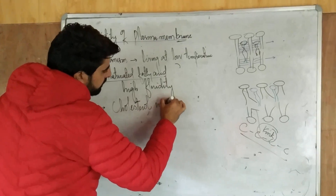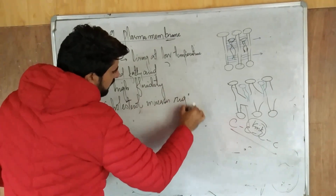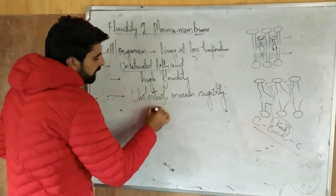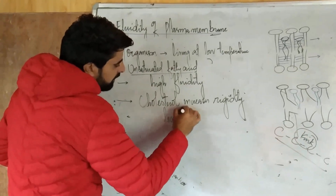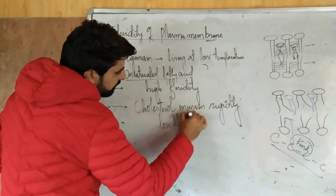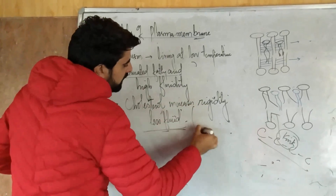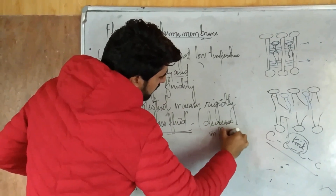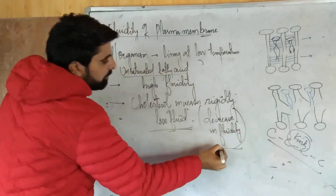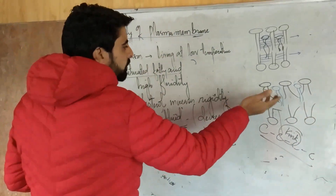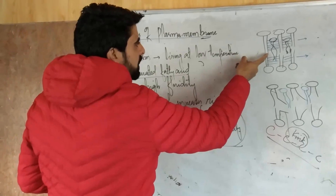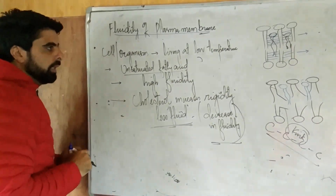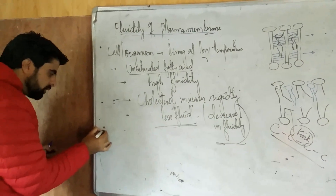Cholesterol here increases rigidity. Due to rigidity, the plasma membrane becomes less fluid, so there is a decrease in fluidity. The more cholesterol you add, the more the fluidity is affected. If more cholesterol is added, the hydrophobic interactions increase, and fluidity changes. There's a difference you have to keep in mind here.